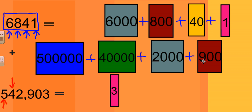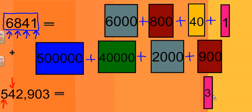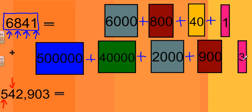Normally we would look at the tens place next, but with a 0 in the tens place, 0 times 10 would equal 0, so we simply skip over that place value and move on to the ones place. We have a 3, and 3 times 1 is equal to 3. Our expanded form is: 500,000 + 40,000 + 2,000 + 900 + 3, which gives us a grand total of 502,903.